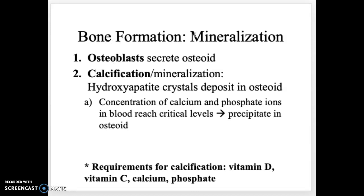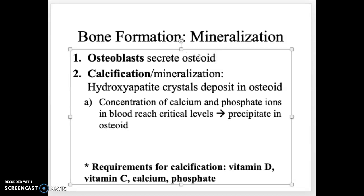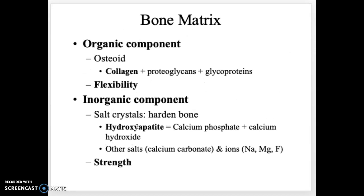The process of bone formation is called mineralization, calcification, or ossification. First, osteoblasts secrete the osteoid, which is the organic collagen component — flexible at this stage. This flexible component is then calcified by hydroxyapatite crystals, the inorganic component that gives bones their strength.